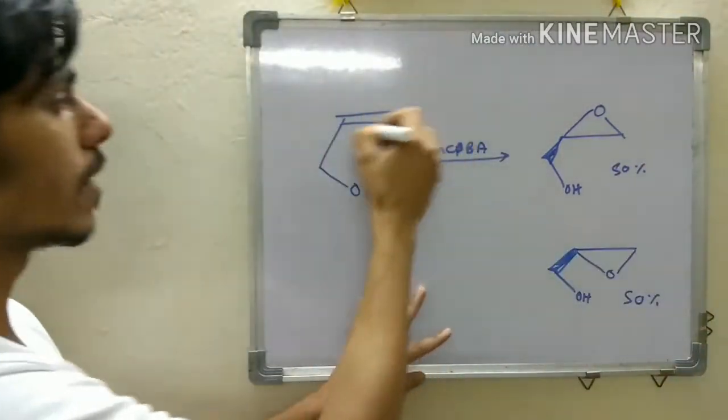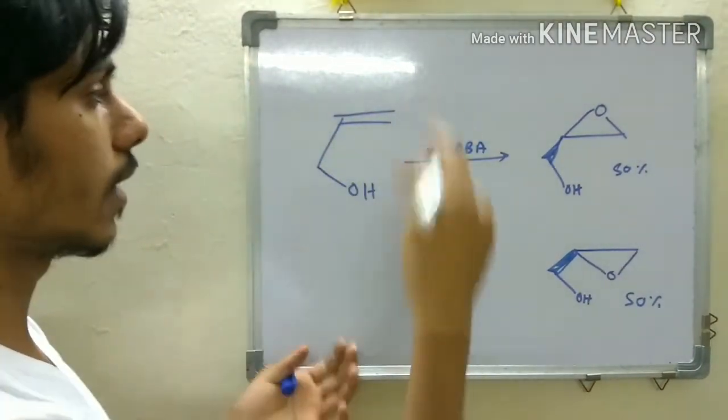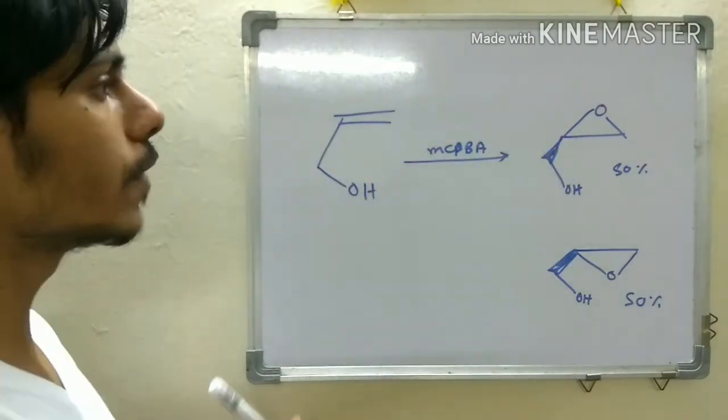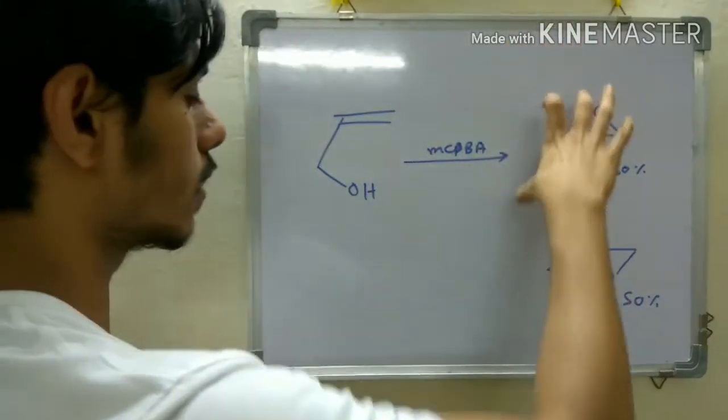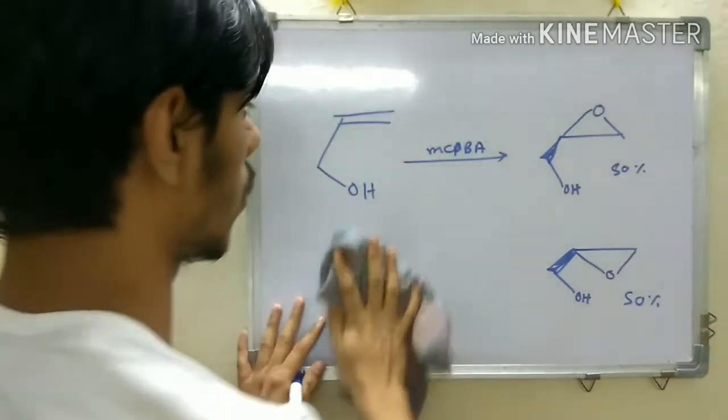Because the two faces of this alkene are enantiotopic and the probability of attack from either face is equal. Now, if you want to get one particular product, either this or this, then you have to use the Sharpless epoxidation method.